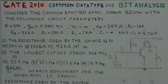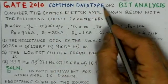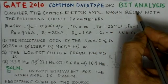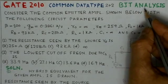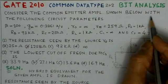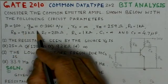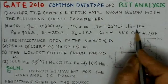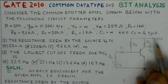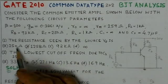Five problems from the years 2010, 2009, 2008, 2007, and 1988 are identified for video solutions. We start with the first problem in this series: gate 2010. It is a common data type worth four marks and is basically on BJT analysis. The problem states: consider the common emitter amplifier shown below with the following circuit parameters — beta is given as 100, and gm, r0, rpi, rs, rb, rc, rl, c1, and c2 values are given.